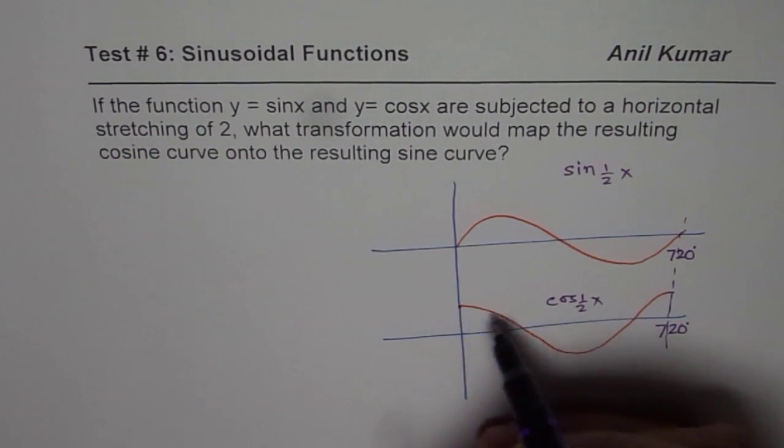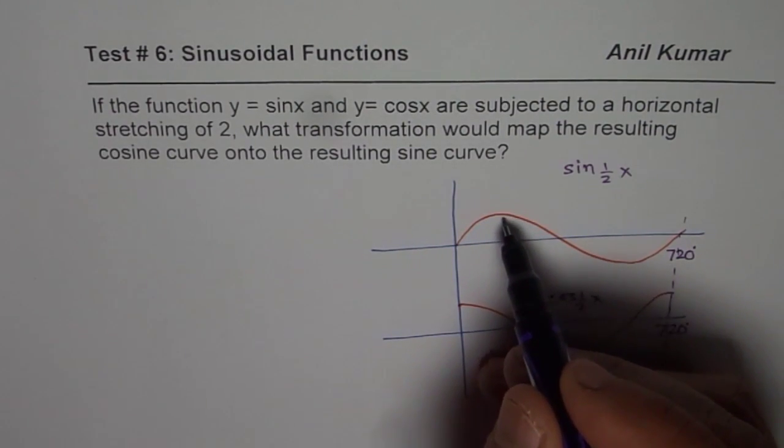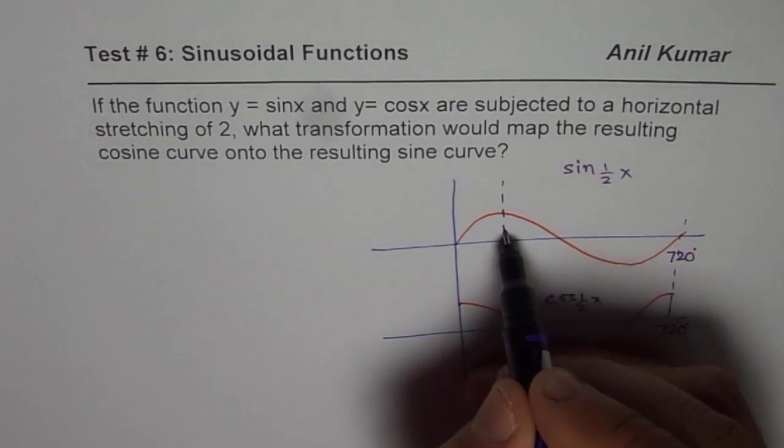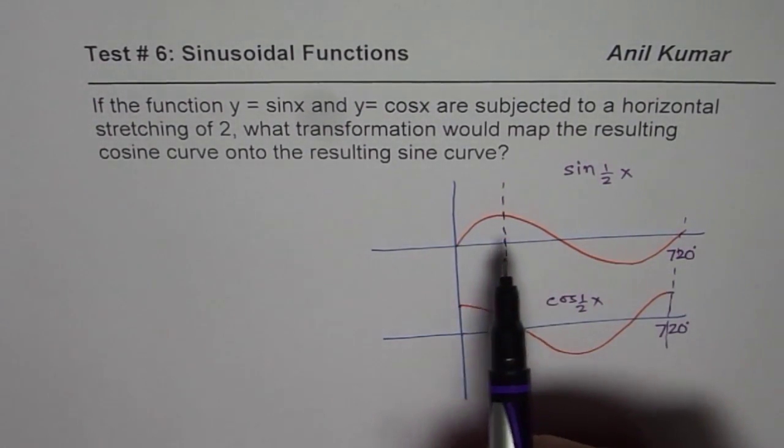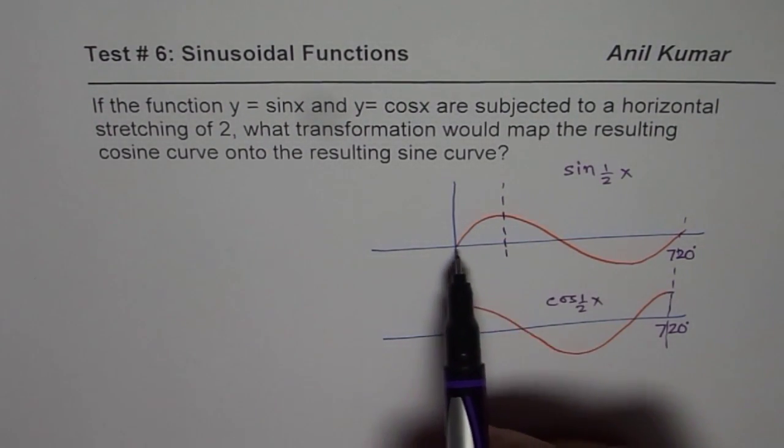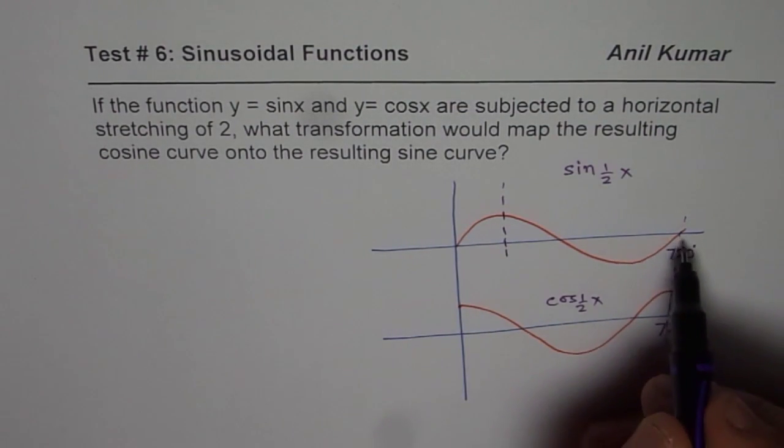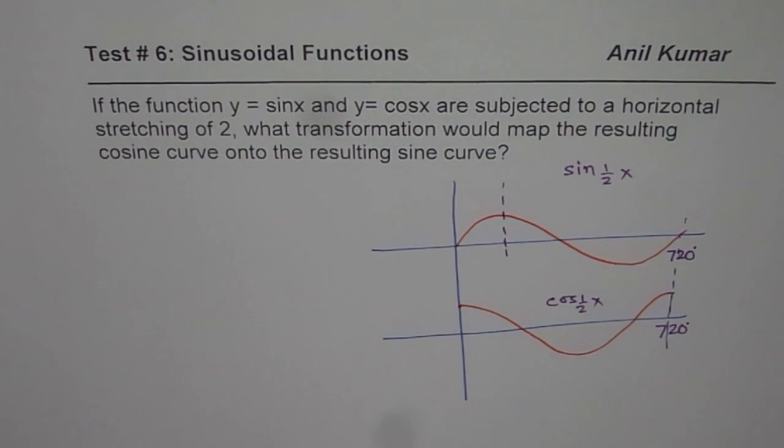Now if you want to map this to the sine curve, then you can see from here that the sine actually starts from, I mean the cosine actually starts from quarter of the cycle. Do you see that? Now quarter of 720 is how much?